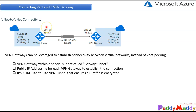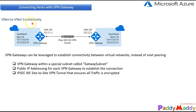After provisioning, which might take around 45 minutes, you need to configure a shared key — a passcode of shared characters. The same shared key must also be configured on the other end VPN device, whether it's a physical device or another Azure VPN device, so that both ends can communicate.